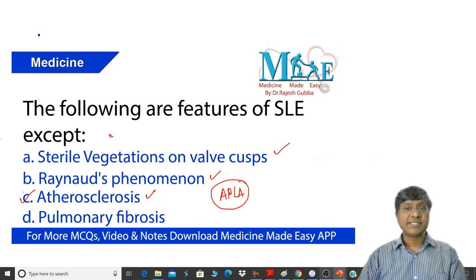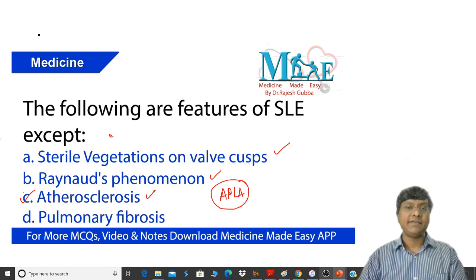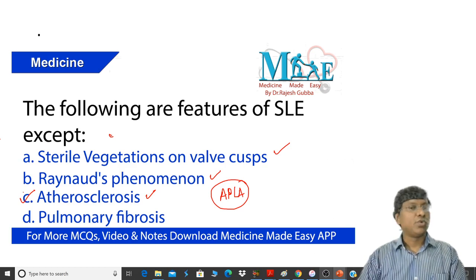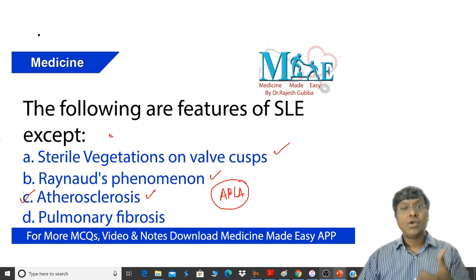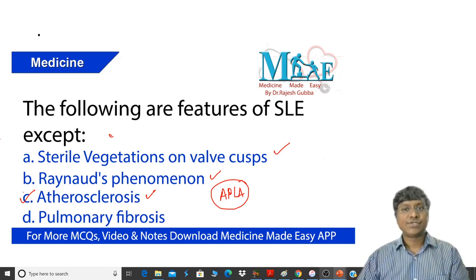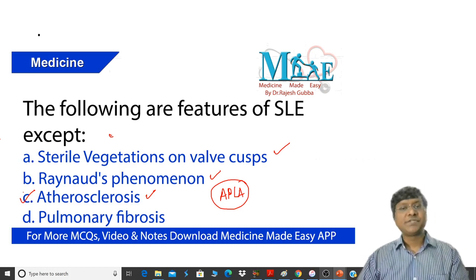Patients with SLE can have coronary artery disease and myocardial infarction. The reason for that is premature atherosclerosis or underlying vasculitis. So the first three options are completely correct.